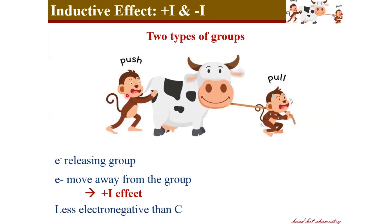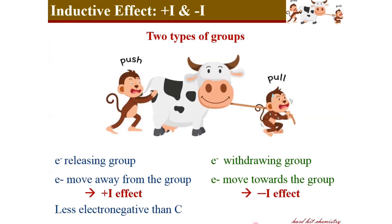Atoms or groups causing the plus I effect are less electronegative than the carbon atom. On the other hand, groups that pull the electron pair towards them are electron-withdrawing groups — this is called the minus I effect. Atoms or groups inducing minus I effect are more electronegative than carbon atoms.